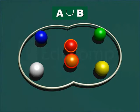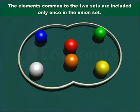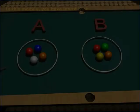Thus, if one or more elements are the same in the sets that are combined, then such elements are included only once in the Union set.